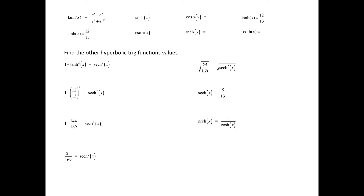Since the hyperbolic secant function and the hyperbolic cosine function are reciprocals, the hyperbolic cosine of x is 13 fifths. So the hyperbolic cosine of x is 13 fifths, and the hyperbolic secant of x is 5 thirteenths.